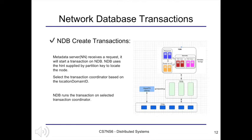The nodes retrieved based on the hints are ordered with the primary replica first, followed by backup replicas. We then determine which node should be selected as the transaction coordinator based on the location domain ID. After selecting the best transaction coordinator, NDB runs the transaction on the selected transaction coordinator.